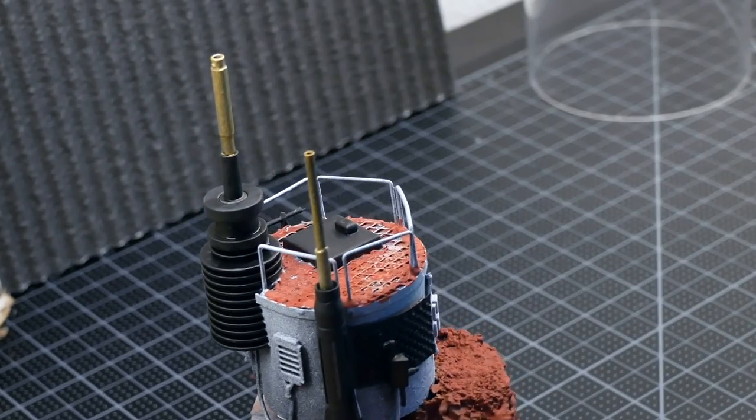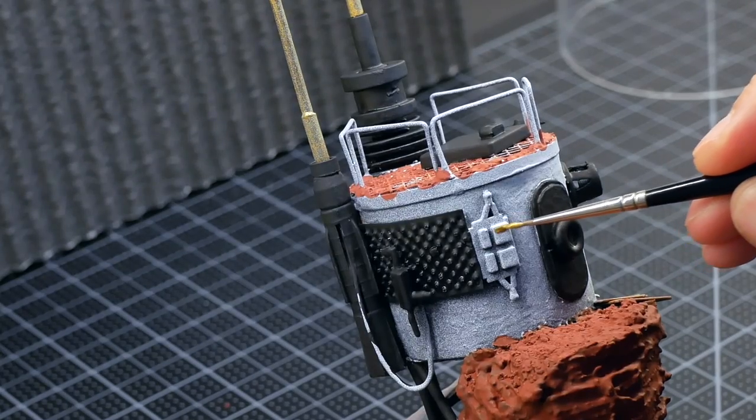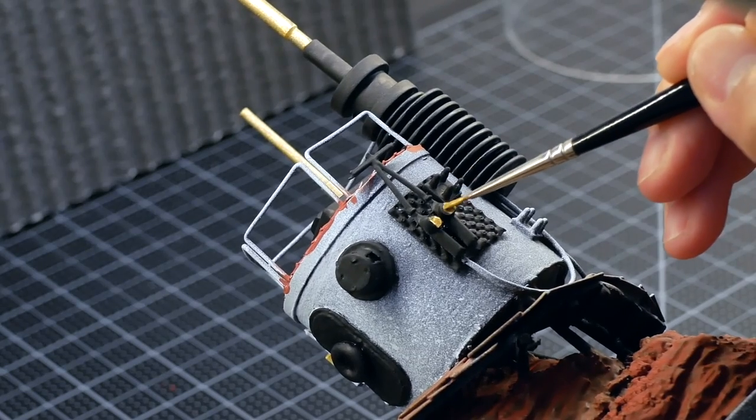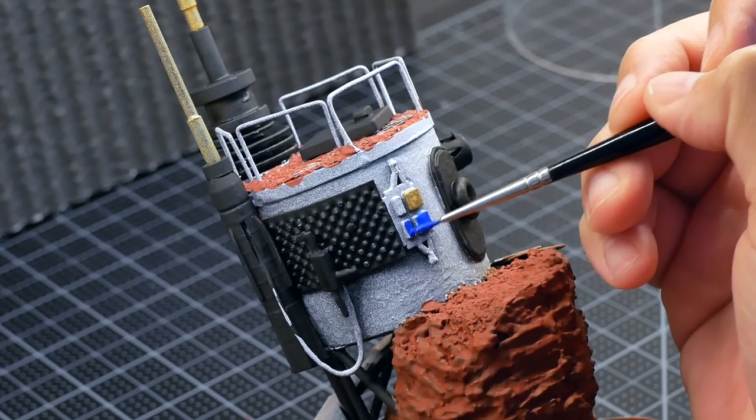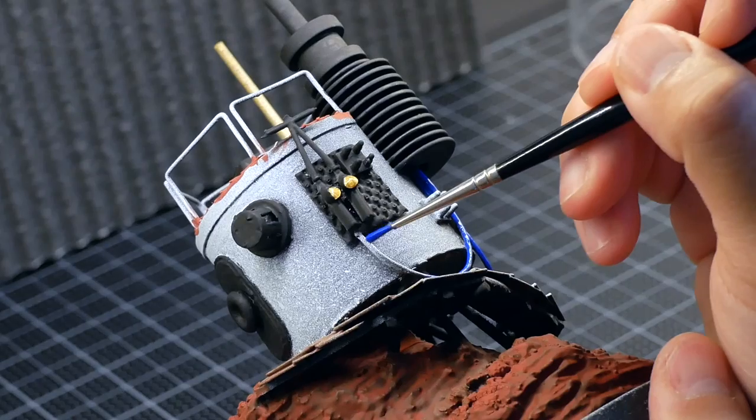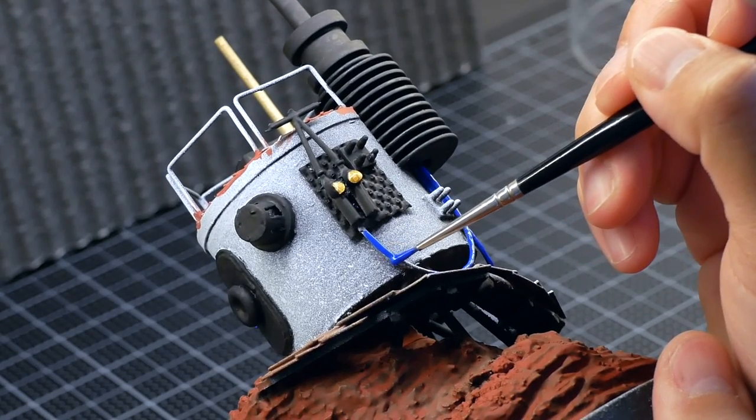A metallic gold paint was used for the tops of the antennas. This same paint was used to highlight small details. I decided to go with a bright blue color for certain instruments, as well as for the cables connecting instruments to the antennas.